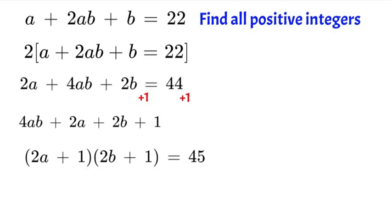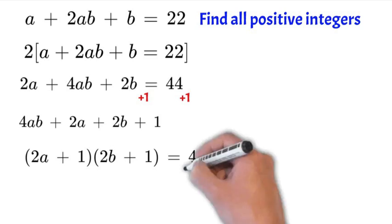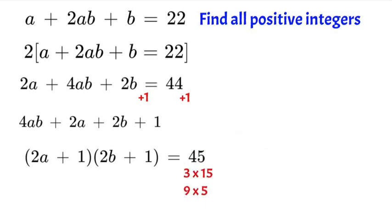So maybe you can see the pattern now. Now that we have 2a plus 1 times 2b plus 1 we should find out what 45 equals if we multiply two numbers. So we have a few options. We have 1 times 45 which doesn't work because in order to get the value of 1 we would have to use a negative number. And the key to this problem is finding all positive integers. So therefore 45 is equal to either 3 times 15 or 9 times 5.